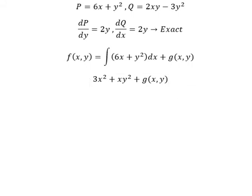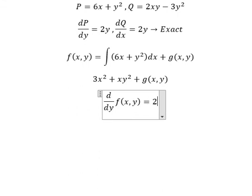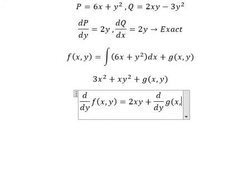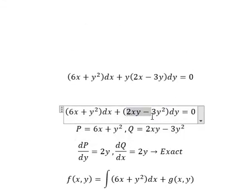Now we need to do first derivative of the function with respect to y for both sides. This one has no y so you get 0. This one has y squared, first derivative of y squared gives 2y.